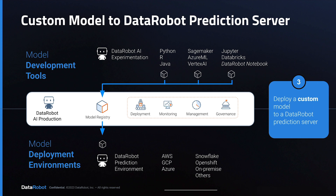The third option is to deploy a custom model to a DataRobot prediction server. Here, the use of the word custom refers to any model produced without using DataRobot's AI experimentation. A common open source combination is Python inside a Jupyter notebook, but if your organization has invested in any of the tools shown here, they can all be used to create models. The custom model comes into the model registry and then can be deployed to the DataRobot prediction server. Remember that your DataRobot software might itself be running on AWS, GCP, Azure, or on-premise.